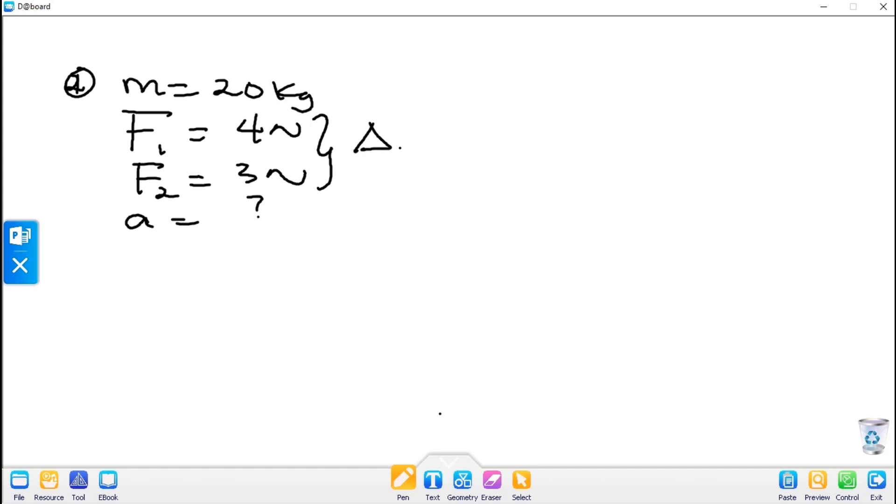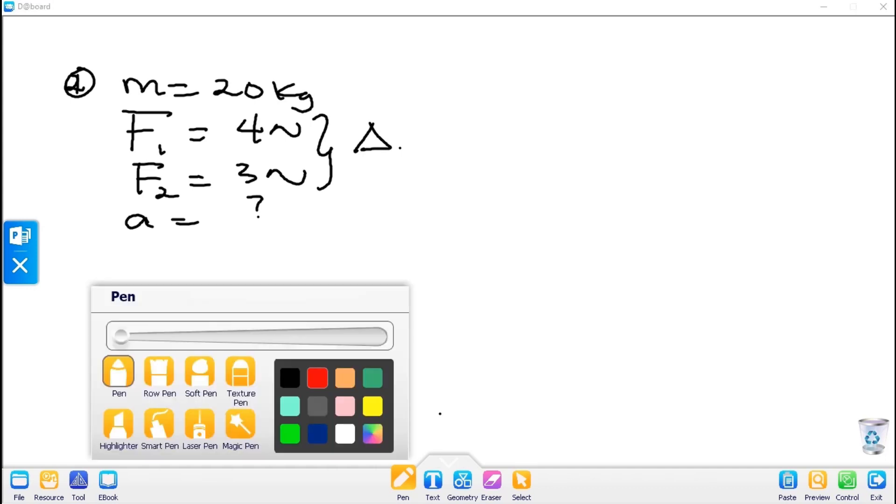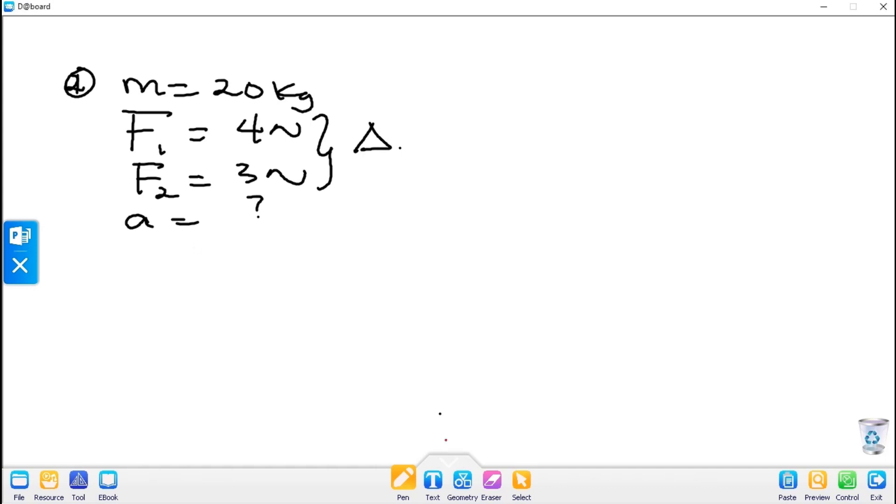Let's take a look at the diagram. This is my right angle triangle. Let this be F1, let this be F2. We are asked to find the resultant, so we have to resolve this.